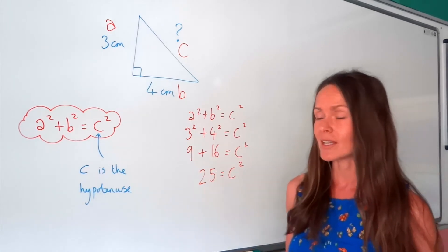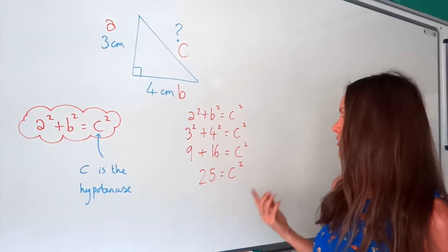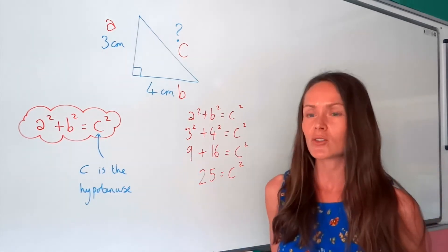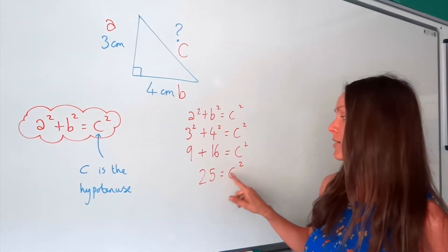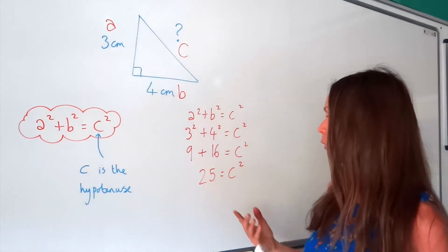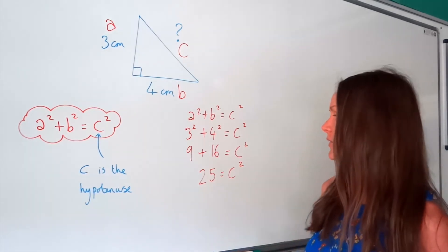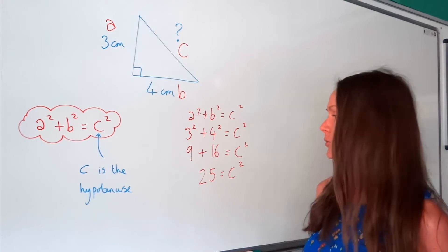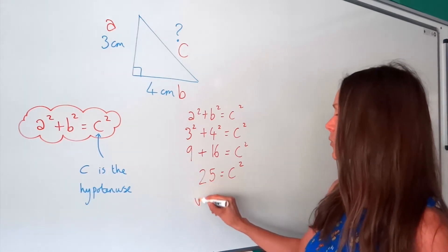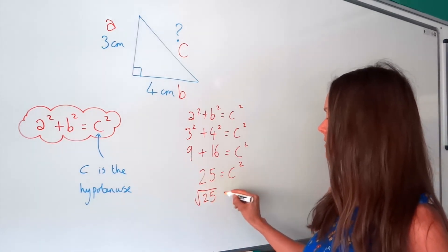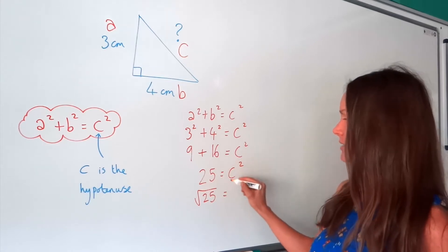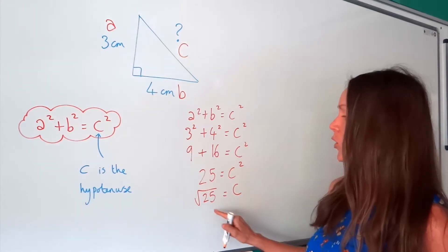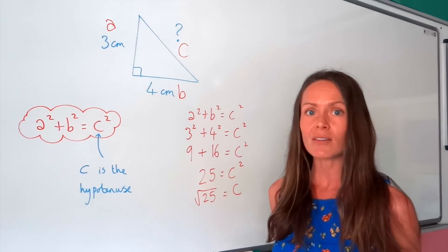Now we've got c squared. So you could either just ask yourself, what number, when I square it, gives me 25? Or you could square root both sides of the equation, and that will also find you the value of c. So if I square root the left-hand side, and I square root the right-hand side, that will just cancel the squared.